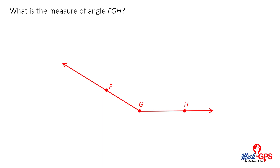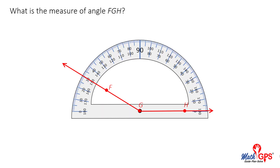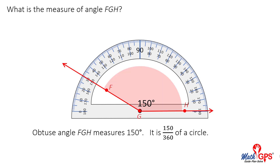What is the measure of angle FGH? Does it appear to be acute, right, or obtuse? Place the vertex of the angle on the location point at the bottom of the protractor. Align one of the rays so that it points to zero degrees. The tick mark locations show the measure of the angle. Obtuse angle FGH measures 150 degrees. It is 150/360ths of a whole circle.